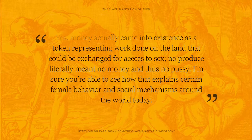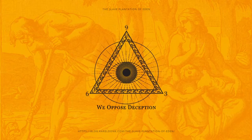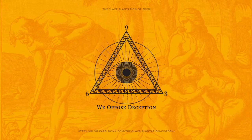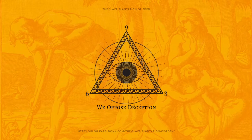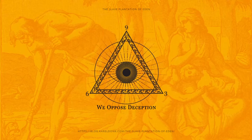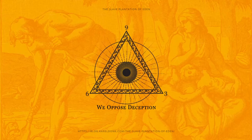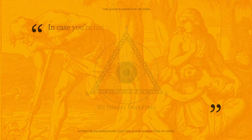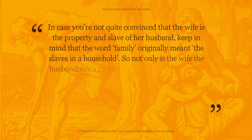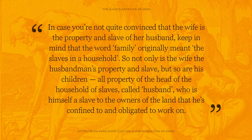Just like how Adam was owned by the owners of the land that he was obligated to slave away on, Adam also owned his wife. A wife is listed as one of the possessions of a man in the Bible. This is also where the concept of marriage comes from, which has become a socially accepted term for what was a transfer of ownership — a sales transaction in the past, where women were sold by their fathers to their new owners or husbands. Yes, in the Bible and many cultures, the term used for husband actually means owner of a wife. Keep in mind that the word family originally meant the slaves in a household. So not only is the wife the husbandman's property and slave, but so are his children — all property of the head of the household of slaves, called husband, who is himself a slave to the owners of the land that he's confined to and obligated to work on.